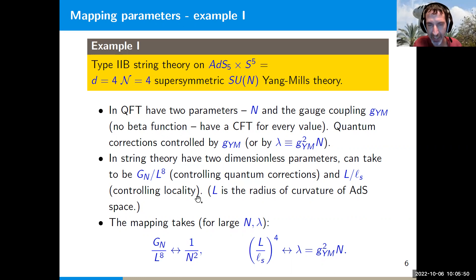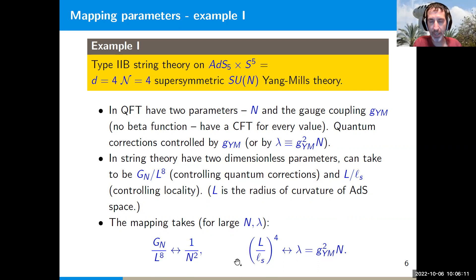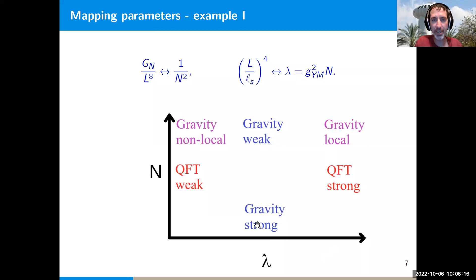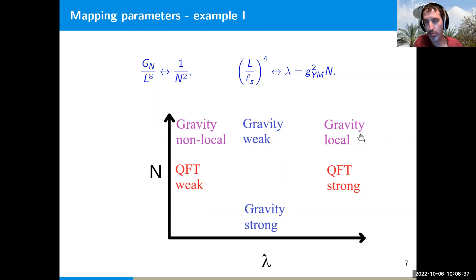If the curvature radius is much bigger than the string scale we have approximate locality; if they're the same order the theory is highly non-local. The mapping at large N and λ is: the parameter governing quantum corrections on the gravity side maps to 1/N² on the field theory side, while the parameter governing quantum corrections on the field theory side maps to (L/l_string)⁴ on the string theory side. So going along the λ axis takes the field theory from weak to strong coupling, while going along the N axis takes the gravity side from weakly to strongly coupled.